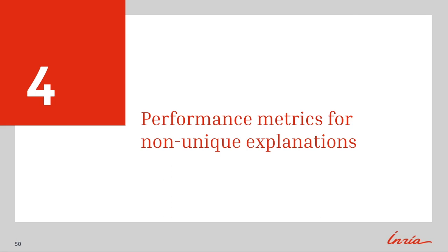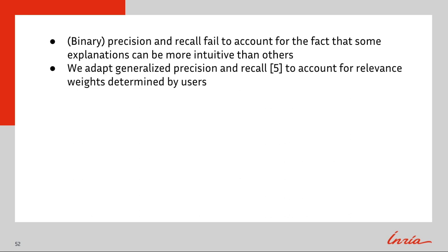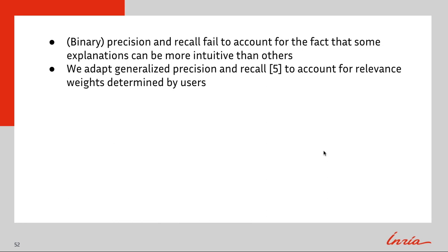In this section, we recommend the use of several scoring metrics to score explanations using the French Royalty 200K dataset. Using standard binary precision and recall fails to account for some explanations being more intuitive than others. Using these metrics could mislead practitioners into thinking that predicted explanations are of high quality when a more intuitive explanation could exist. Therefore, we adapt generalized precision and recall to account for the relevance weight of each explanation as determined by users.